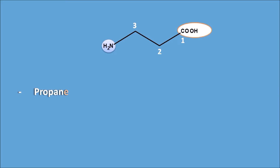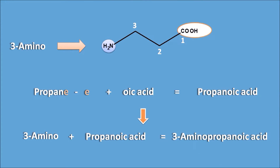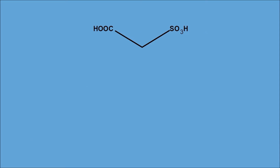The base name is propane, where we replace the 'e' with the suffix for carboxylic acid — that is, 'e' is replaced with 'oic acid' — giving propanoic acid as the root name. The amine group is present at the third position, so it is '3-amino'. The complete name of this compound is 3-aminopropanoic acid.